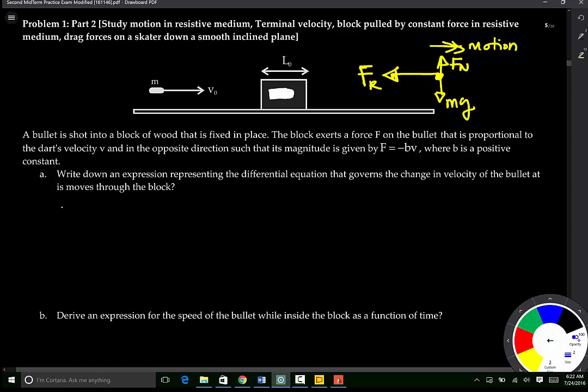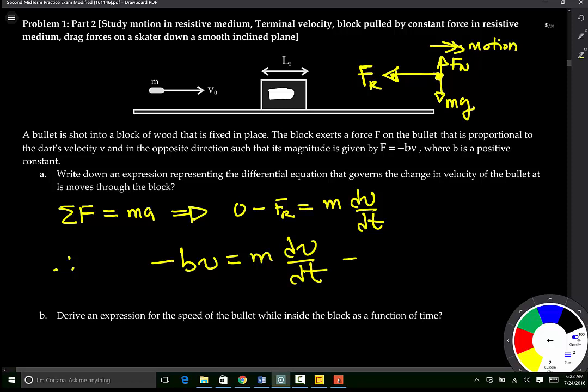From Newton's second law, the summation of F is equal to MA, which means that 0 minus FR is equal to M dV/dt. Therefore, -bv is equal to M dV/dt.